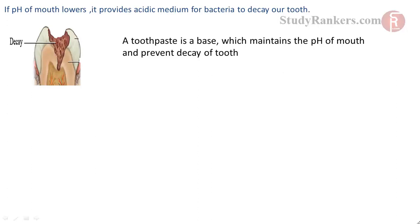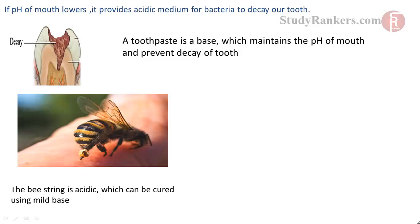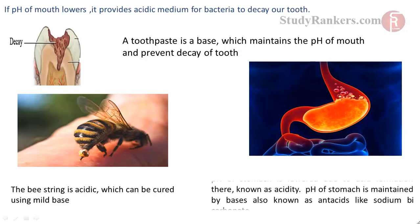Toothpaste is a base which maintains the pH of the mouth and prevents tooth decay. Bee stings are acidic and can be cured using a mild base. The pH of the stomach is lower due to acid formation there, which is known as acidity. The pH of the stomach is maintained by bases also known as antacids, like sodium bicarbonate.